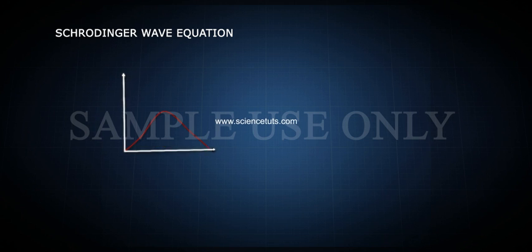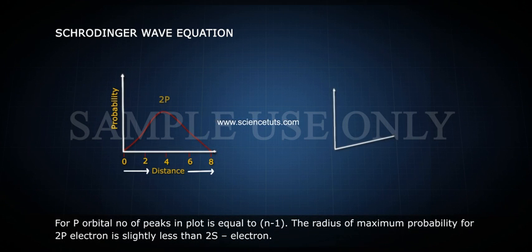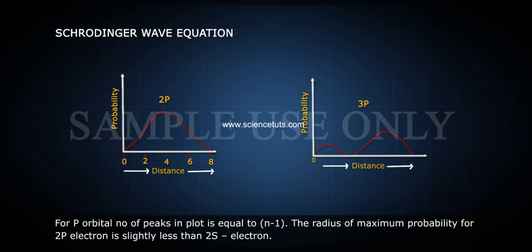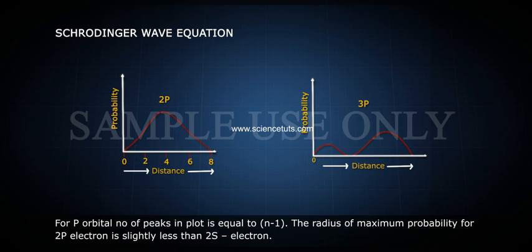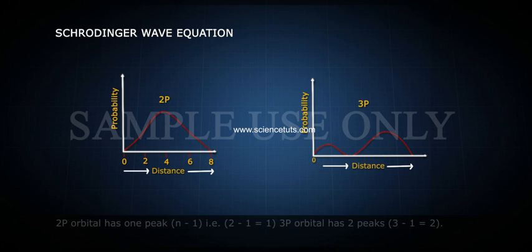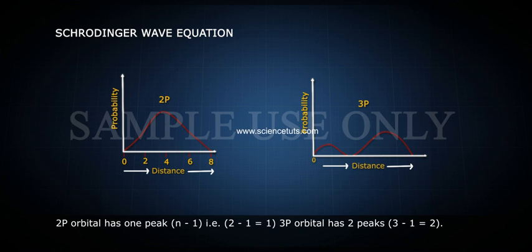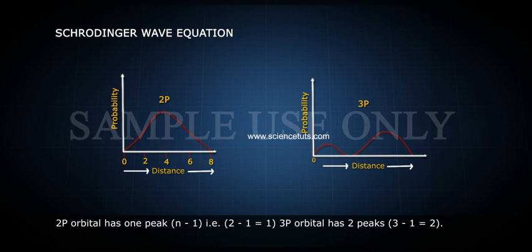The radial probability distribution curves for P orbital: the number of peaks in the plot equals n minus 1. The radius of maximum probability for a 2p electron is slightly less than that of a 2s electron. The 2p orbital has one peak (2 - 1 = 1), and the 3p orbital has two peaks (3 - 1 = 2).